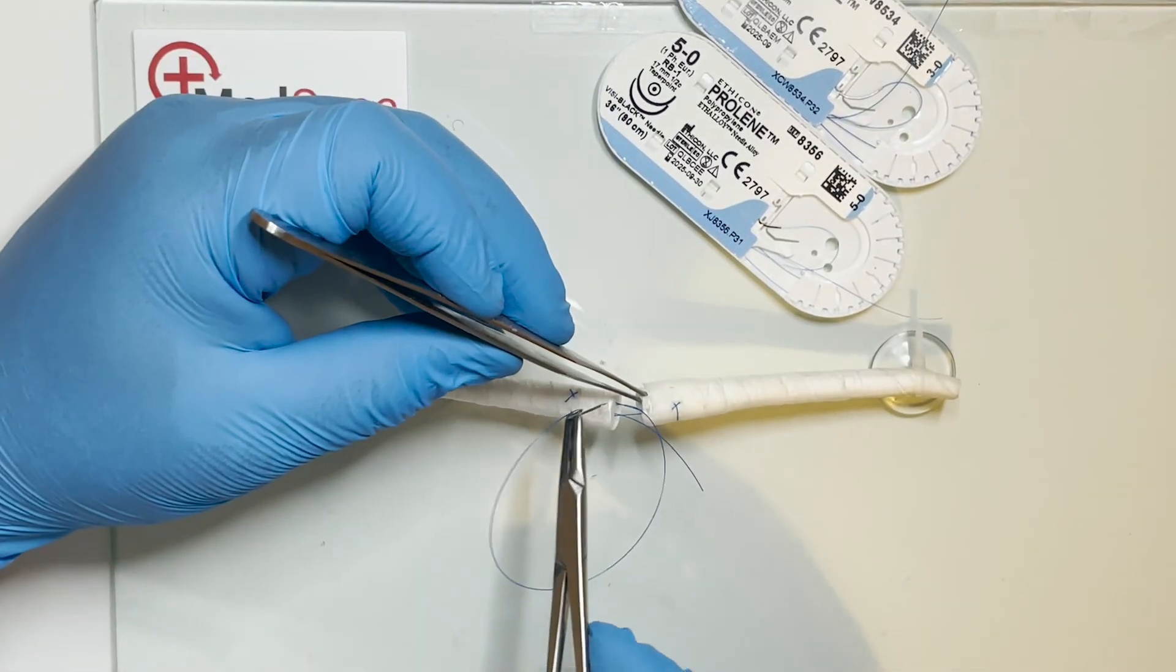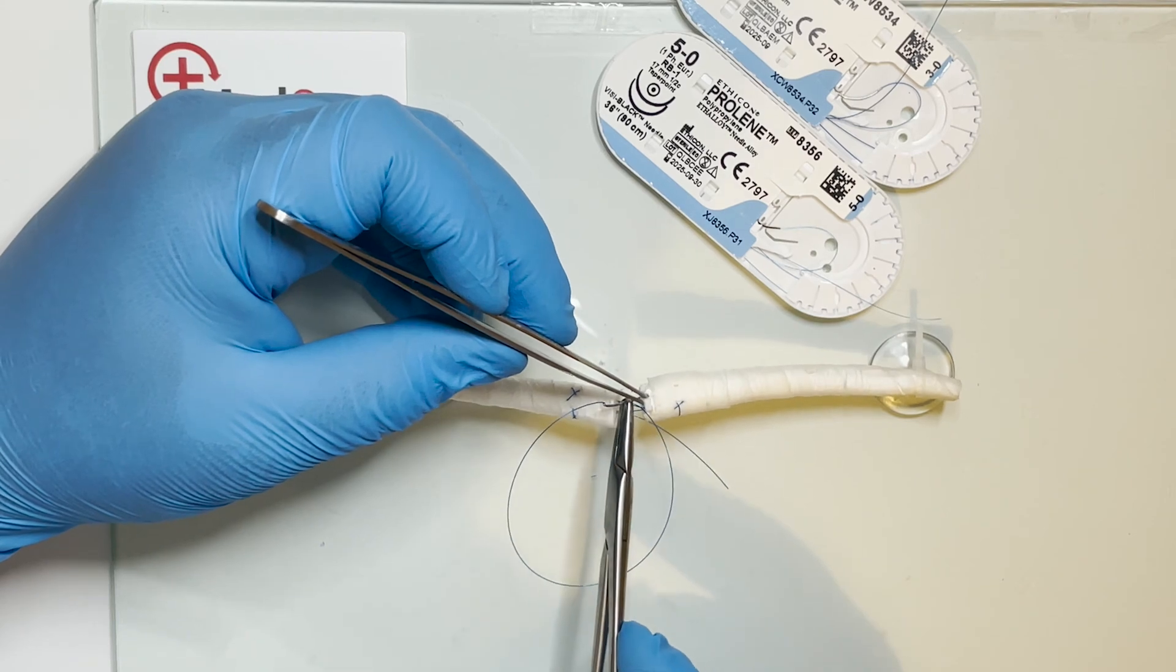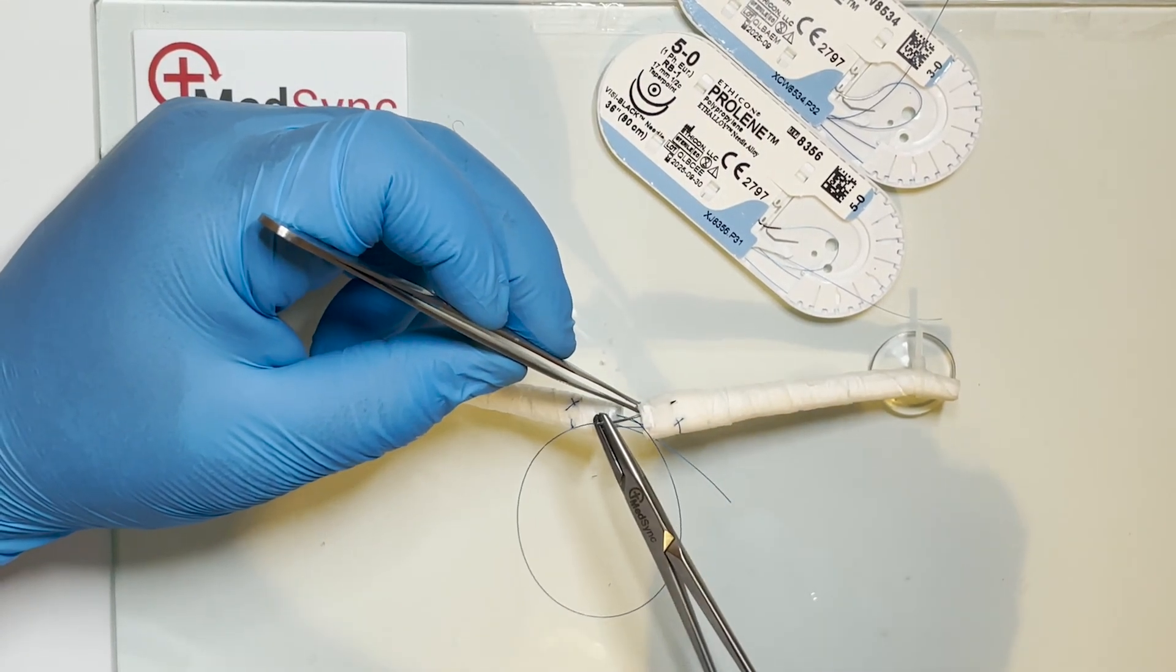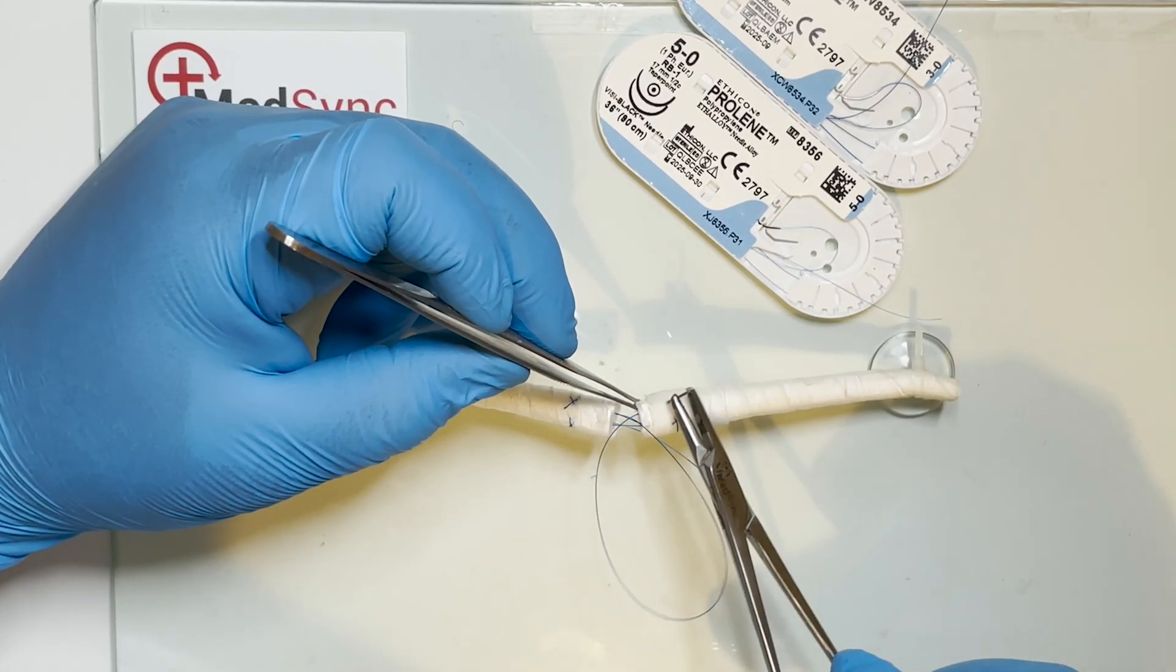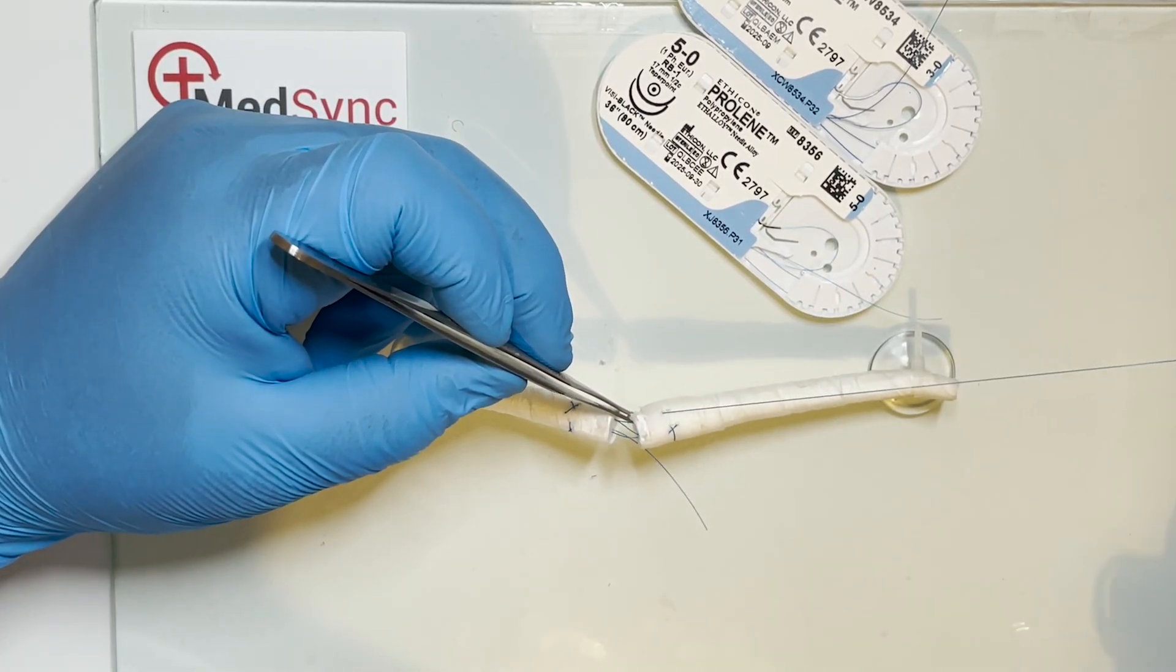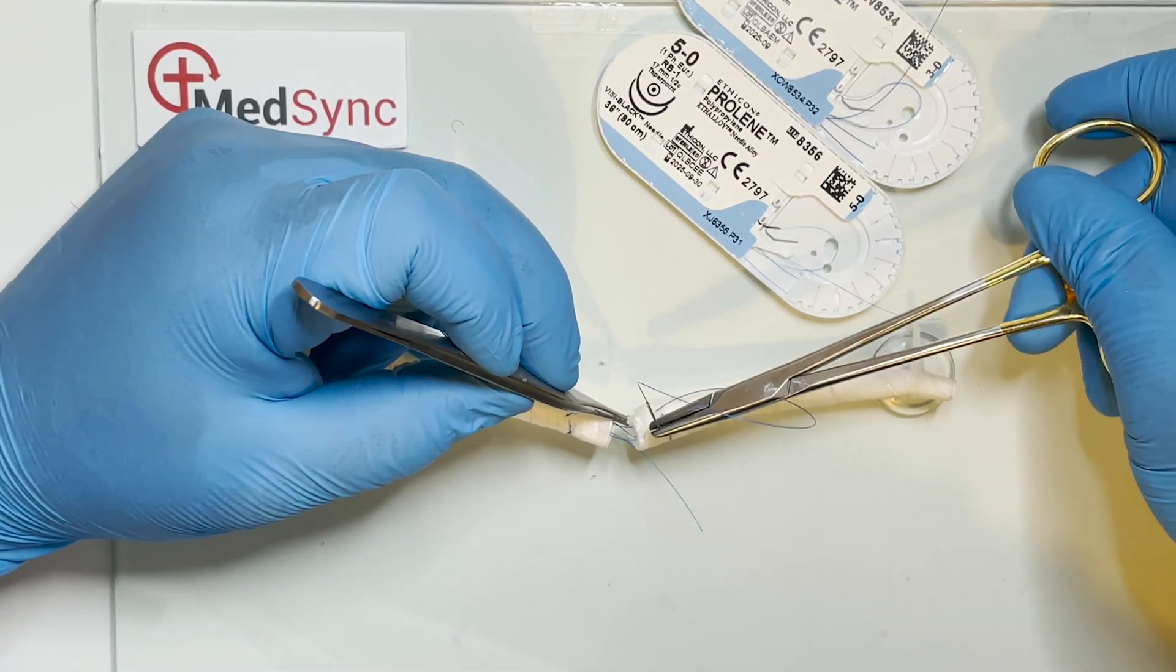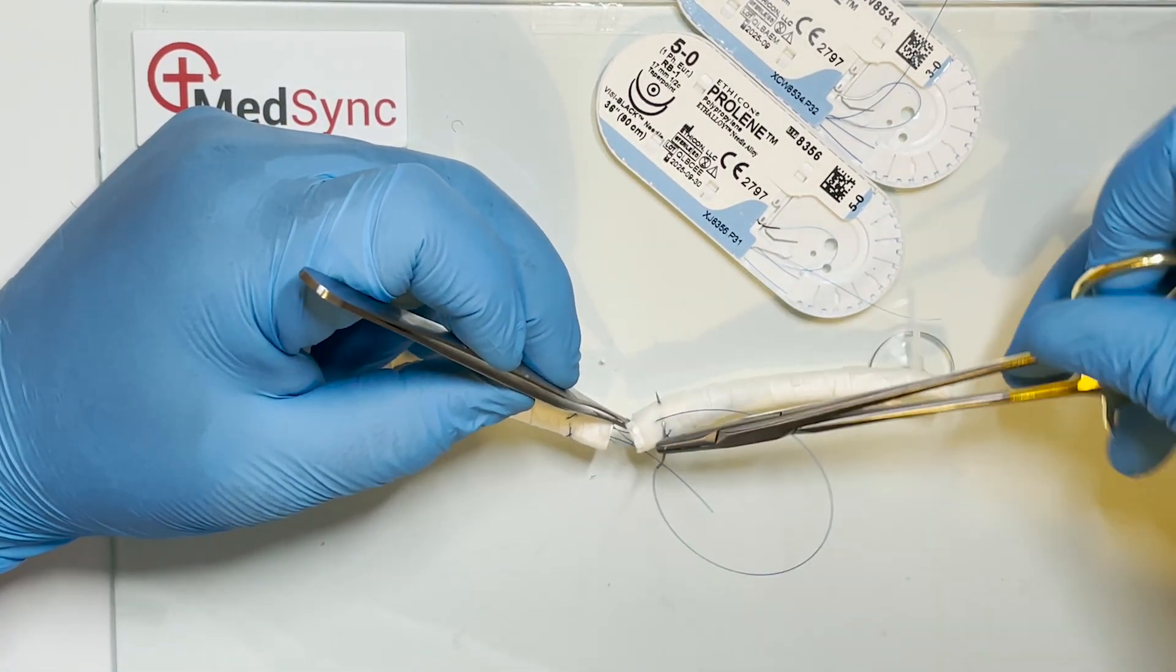Now the final cross: a one centimeter bite longitudinally along the lateral aspect of the tendon, followed by a transverse bite distal to the first, the suture passing away from you.